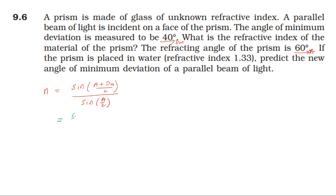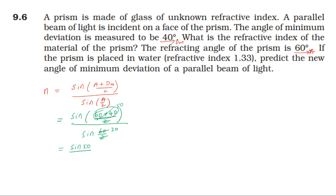sin of angle of prism 60 plus minimum deviation 40, divided by 2. All divided by sin of 60 divided by 2. So, 60 plus 40 is 100, divided by 2 gives 50. And 60 by 2 is 30. So, sin 50 divided by sin 30.